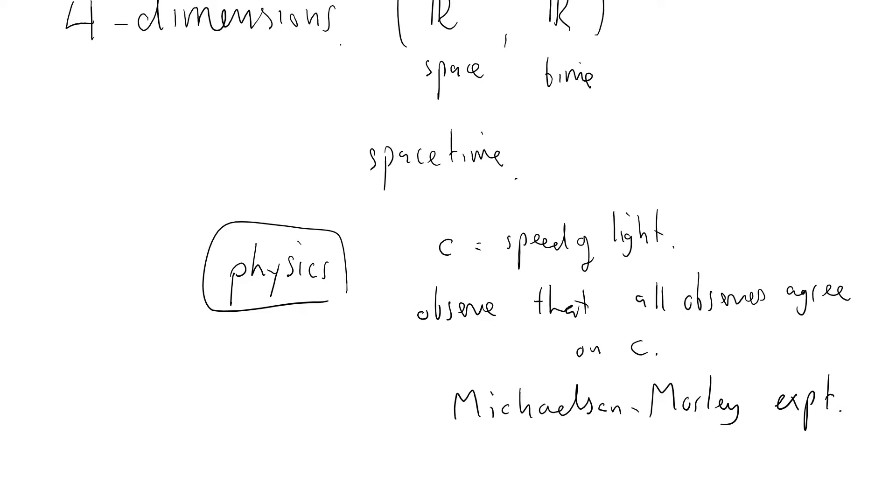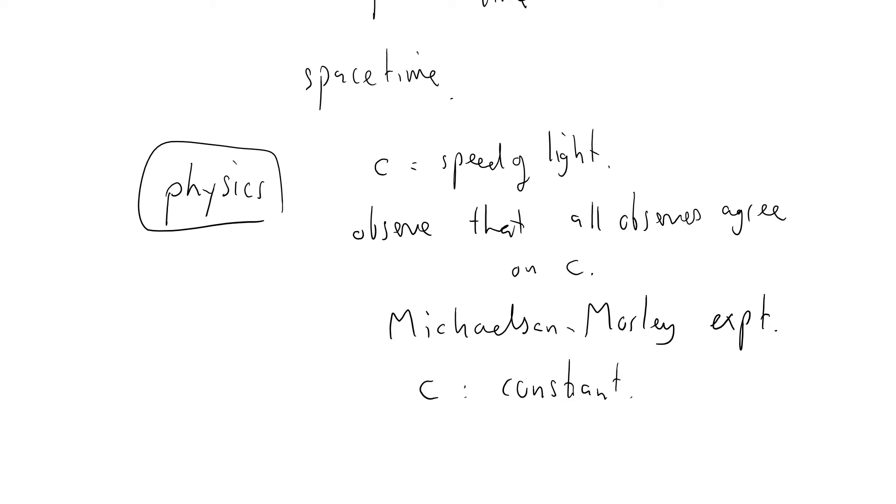They made the observation that the speed of light was constant. They said that c was constant and it didn't depend on your direction, it didn't depend upon your motion through space, which they thought was going to affect the measurement of the speed of light.